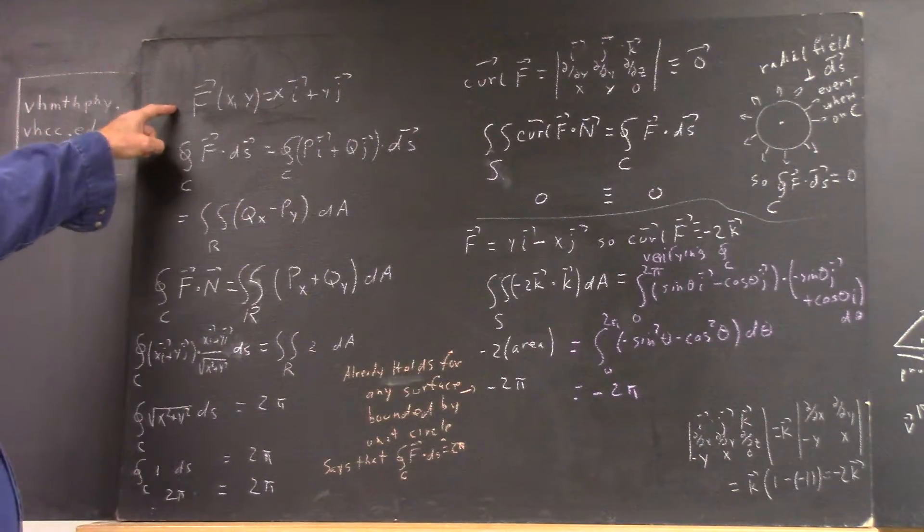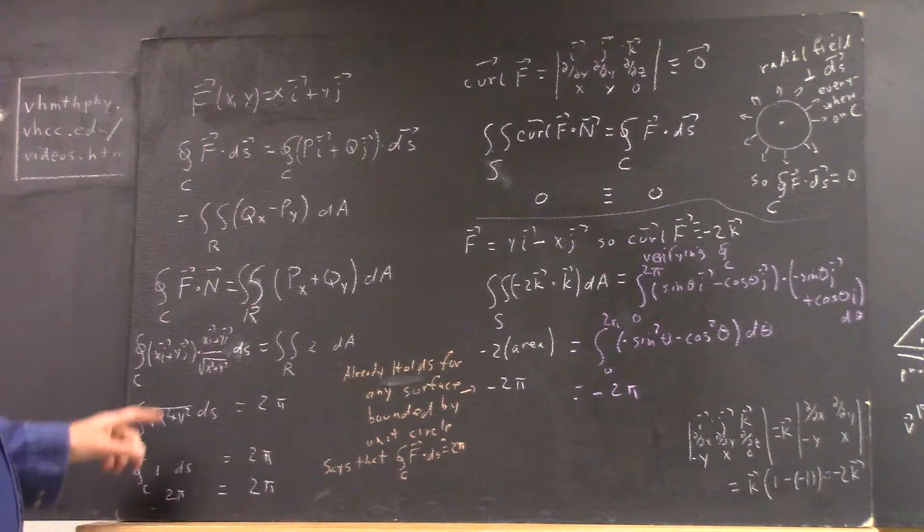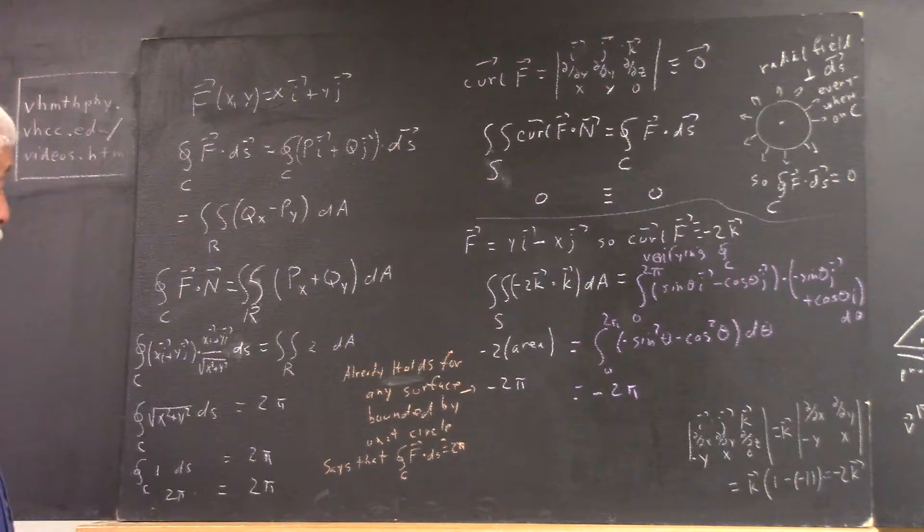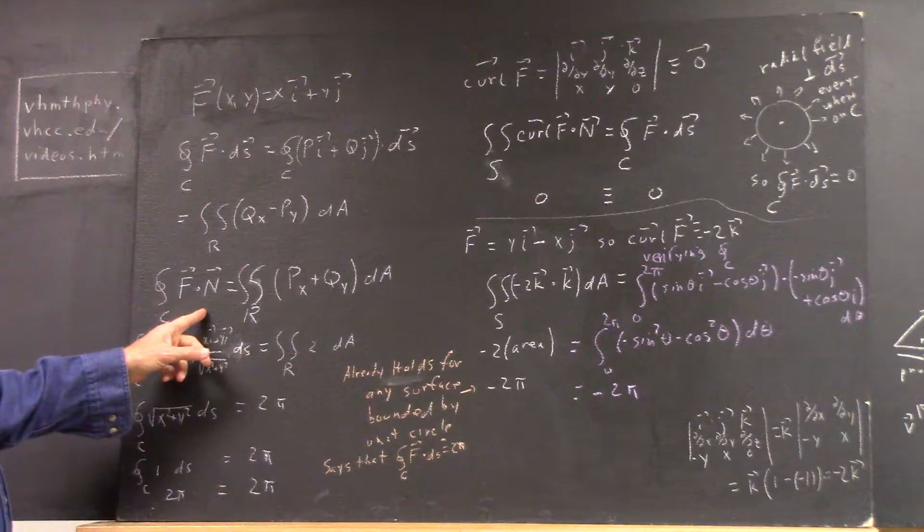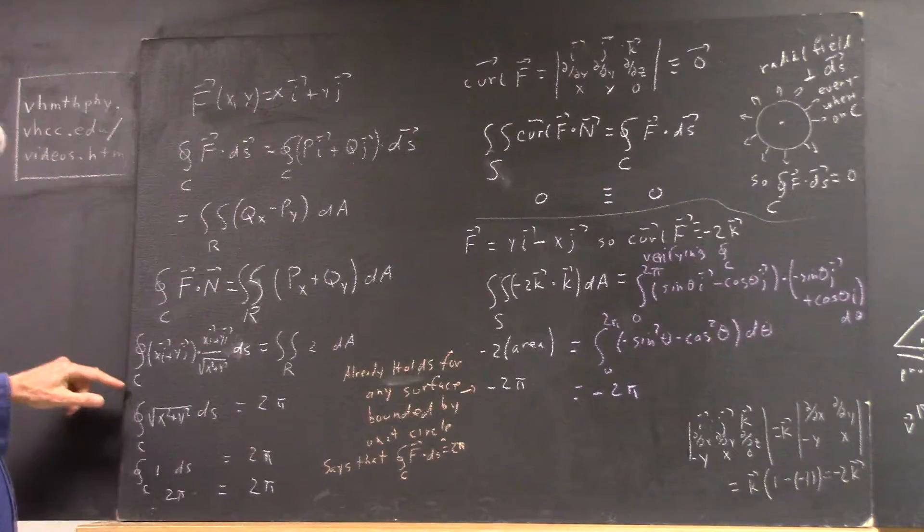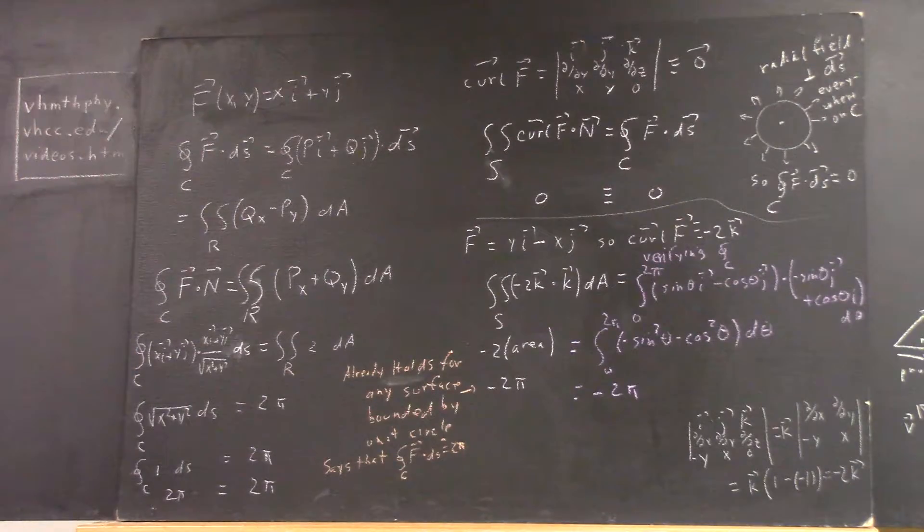In the case of this field, you'd have the integral of xi plus yj, your f function, dotted with your unit normal vector to the unit circle. We are doing this about the unit circle, and I should probably inform the uninitiated.